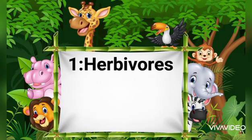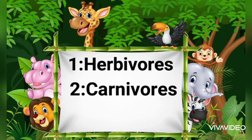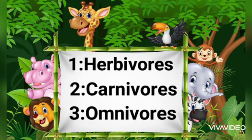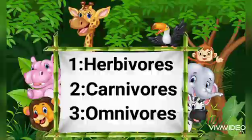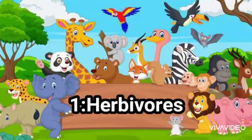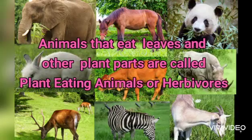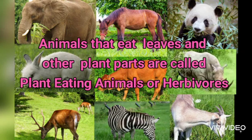1. Herbivores. 2. Carnivores. 3. Omnivores. Herbivores: Animals that eat leaves and other plant parts are called plant-eating animals, or herbivores.